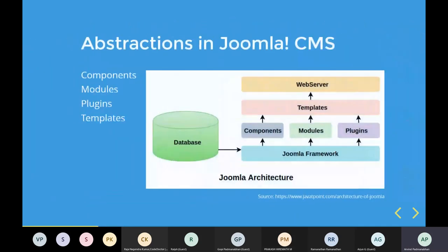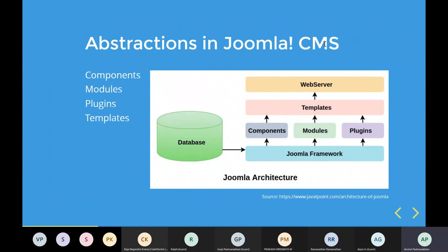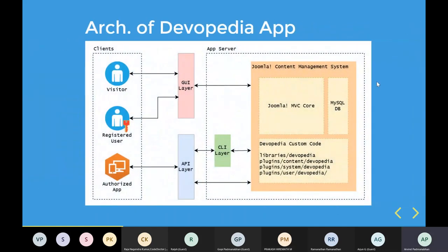Next up is the architecture of Devopedia. On top of what Joomla CMS provides, we have built the Devopedia web app. The Joomla CMS with its MVC core and MySQL database is enclosed in the orange box. On top of that we have custom code in four folders: libraries for common code, and three plugins — content plugin, system plugin, and user plugin — customized for our article management and user management. Then we have three interfaces: GUI layer, API layer, and CLI layer.